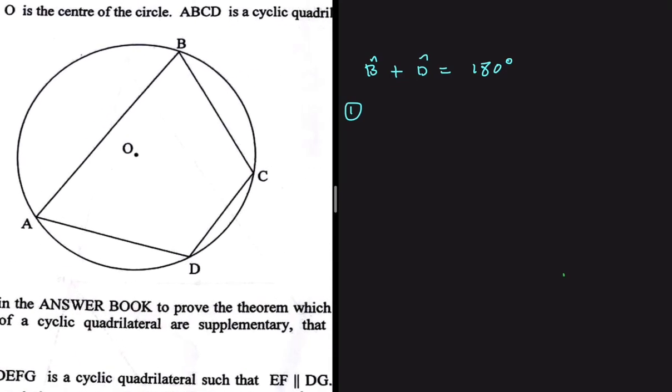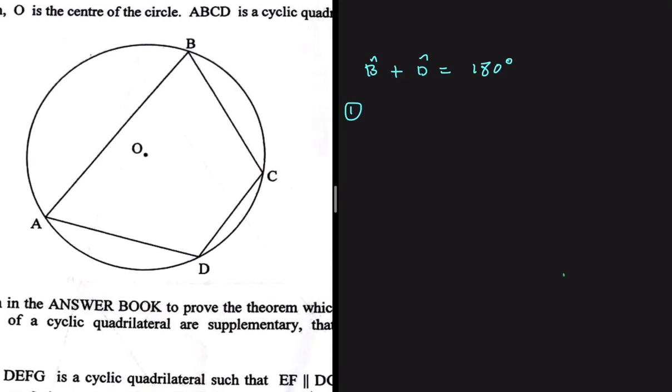If we're proving that angle B plus angle D equals 180, then we're going to join the center to the other two vertices of our cyclic quad. So here we're going to join OA and OC. Let me just go ahead and do that.